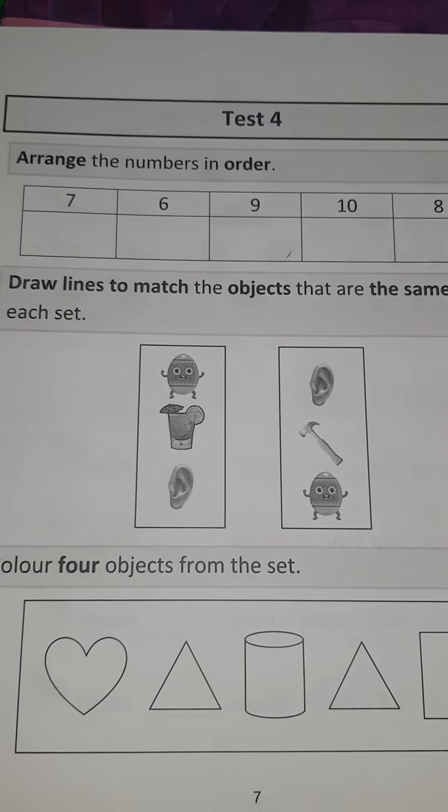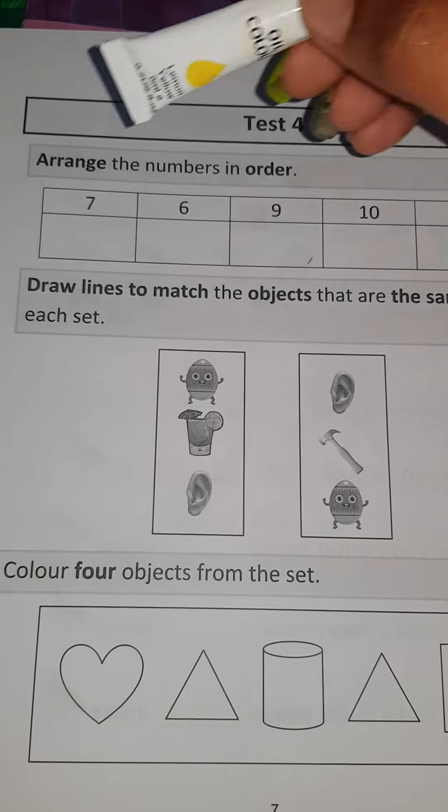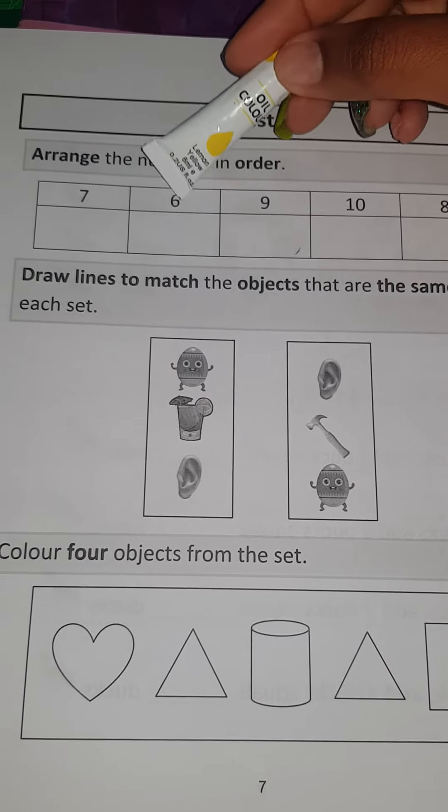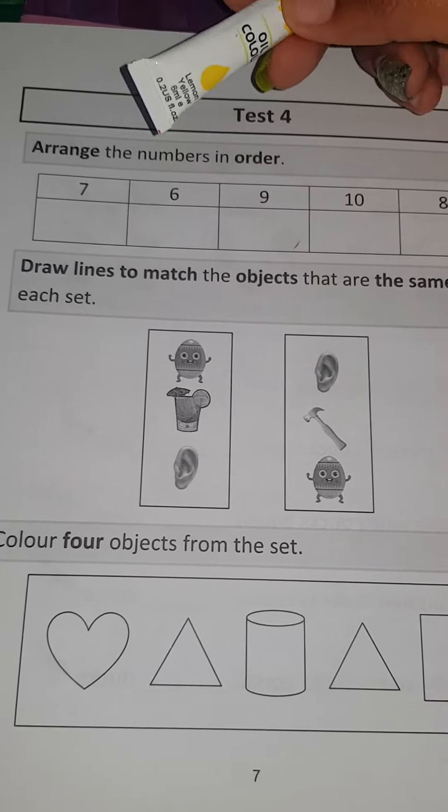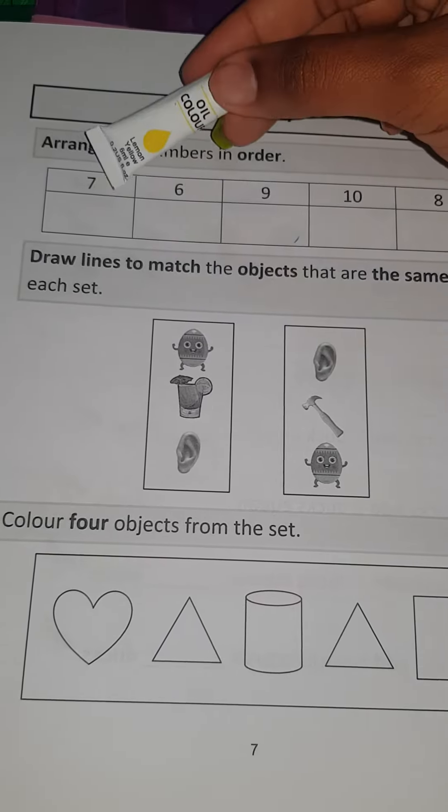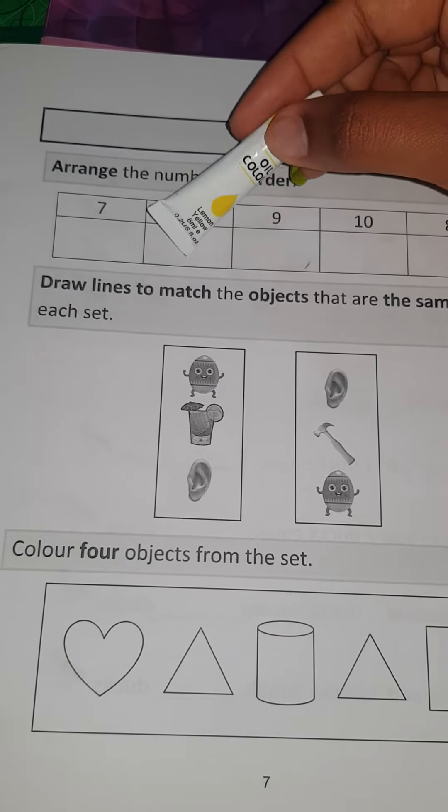So if we're counting, we'll see that number 6 comes first. 1, 2, 3, 4, 5, 6. So 6 goes in the first box. What comes after 6? Is it 9? No. It's 7. So 7 goes over here.